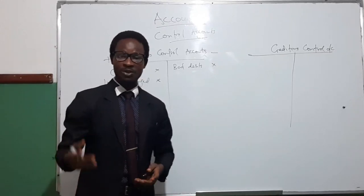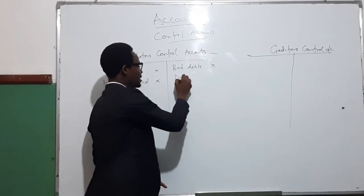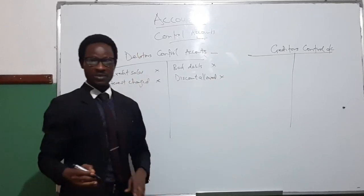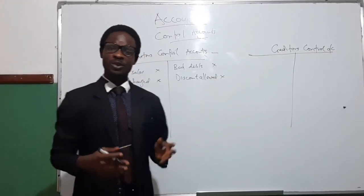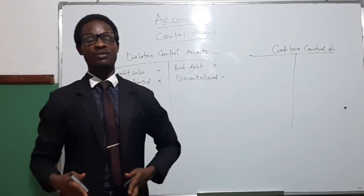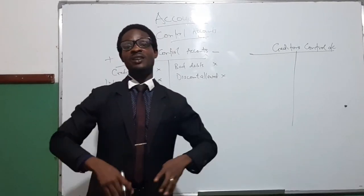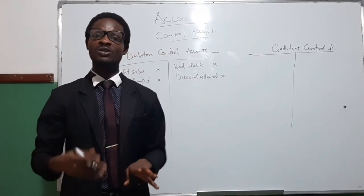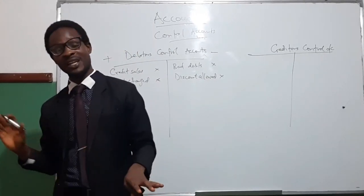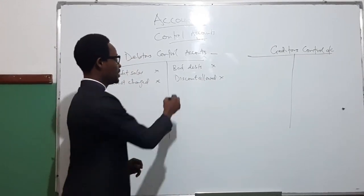Also, when discount is allowed to debtors, the amount they should pay will reduce, so it goes to the credit side. Sales returns will also reduce the value of what customers should pay. When you have sold goods of, say, $10,000 to customers and the following day they returned $1,000 worth of goods, that $1,000 will be reduced from the $10,000 sold initially. So sales returns will reduce the value of debtors.